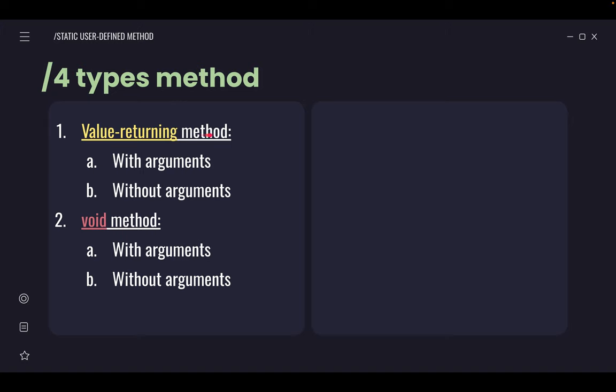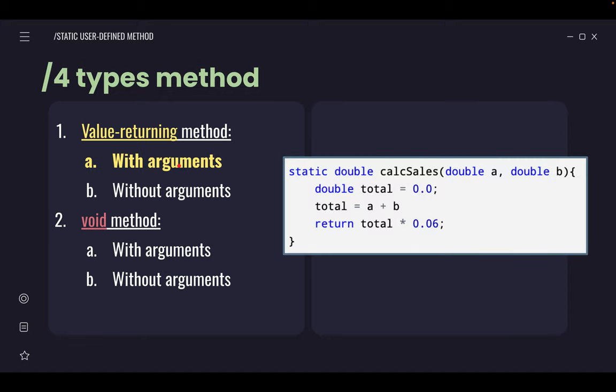The first one is the value-returning method with arguments. What does it mean? Let's look at the example here. The word static is mandatory—you have to put it. With arguments means value-returning. Value-returning means there's a return type. So our return type here is double. Our method name is calcSales. With arguments means there is a value in our bracket. Remember, in the bracket, the template is data type, then variable. What variable do you want to use? Data type, variable. Data type, variable. Since it's value-returning, that's why there's a return statement. This method is simple: we declare one variable total, then total takes the sum of A plus B. A and B come from where? They come from the parameters, the arguments A and B. Then it calculates total times 0.06, meaning times six percent.